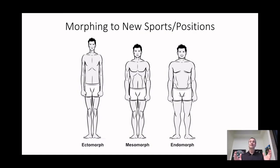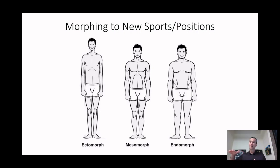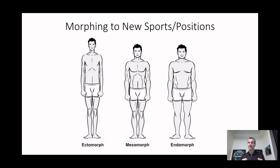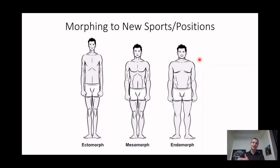We all know that there are different types of bodies, even within the same family. My brother is five foot seven and I'm six foot two, so there's a big difference in height, body shape, and size. He's more of an endomorphic body, which means he's got a more massive body and shorter arms and legs, and I'm more of a mesomorph.